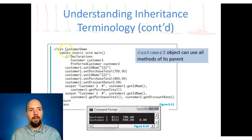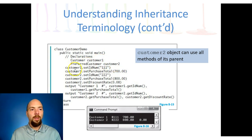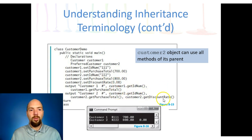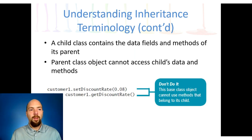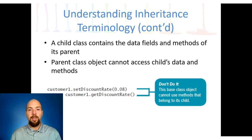We have a class called customer demo with customer one and preferred customer two. Customer one is a regular customer with no discount; customer two is preferred and gets a discount. We set customer one's ID and purchase total to $700. Customer two also gets an ID and purchase total, but we can also set the discount rate. The regular customer only has an ID and purchase total; the preferred customer has those plus a discount.